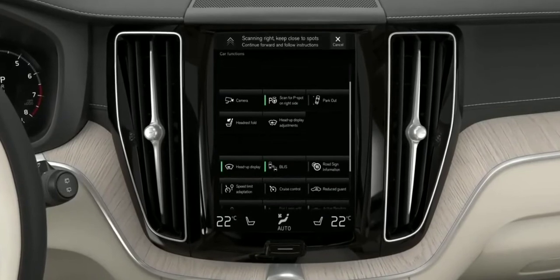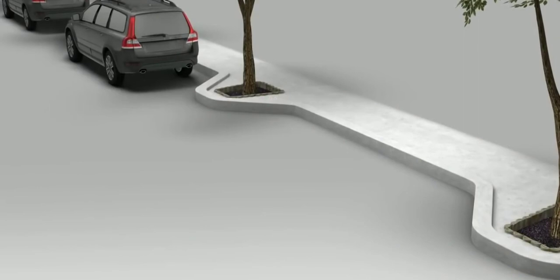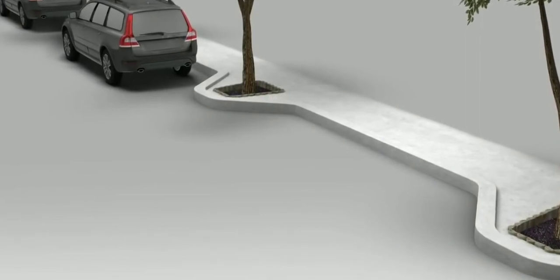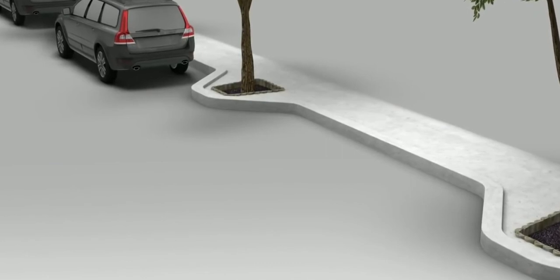Some situations require extra attention. If you are parallel parking on streets with curbs that protrude, there is a risk that the system will not detect the curbs, poles or trees.